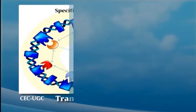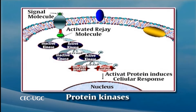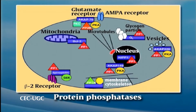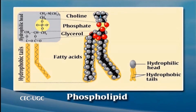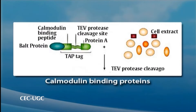The second group of regulatory proteins are involved in further regulation of signal transduction and stress-responsive gene expression. These generally include various transcription factors, protein kinases, protein phosphatases, enzymes involved in phospholipid metabolism and other signaling molecules such as calmodulin or calmodulin-binding proteins.